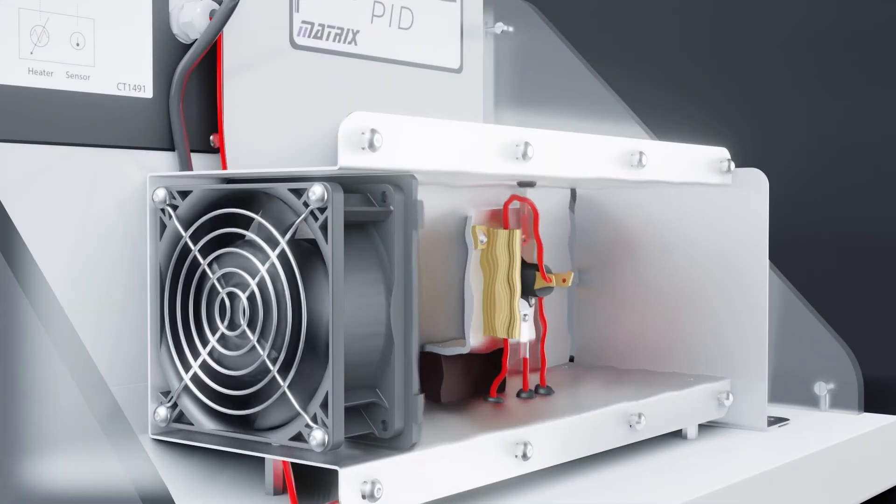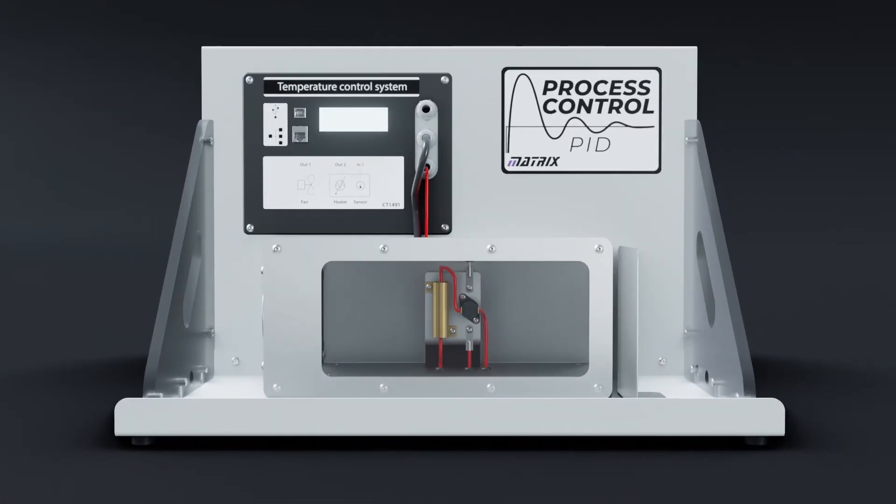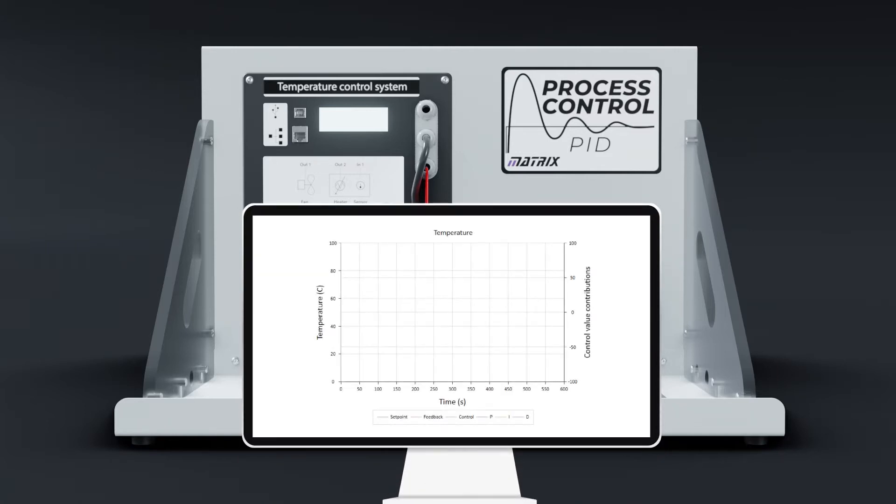A fan at one end of the duct blows ambient air over the block to change the control conditions and provide a disturbance to the system. The system allows students to adjust the heater power and the airflow rate to develop a PID-based control system, then adjust these parameters to achieve the required time or temperature change profile.